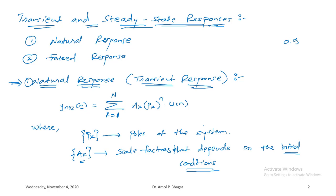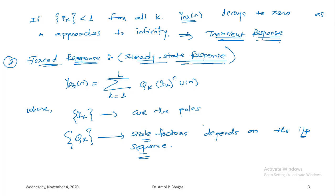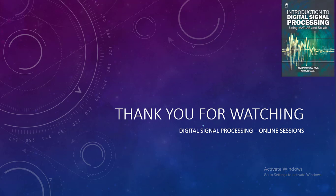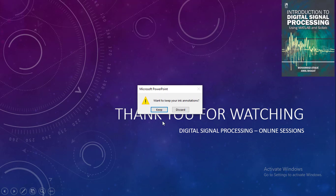That is how we define the natural response and the forced response, and depending on the characteristics of pole locations, we refer to them as the transient response and the steady state response. In the next session we will solve an example identifying the transient response (natural response) and the steady state response (forced response) for a given system with a sinusoidal input signal. Thank you for joining this session.